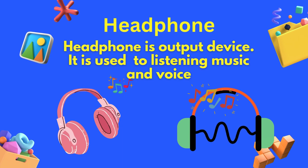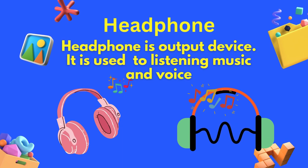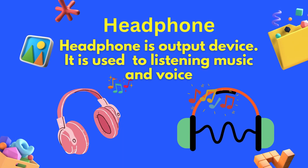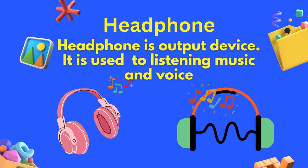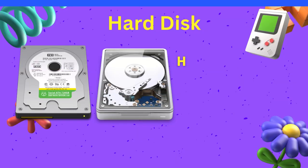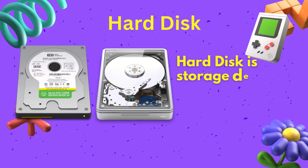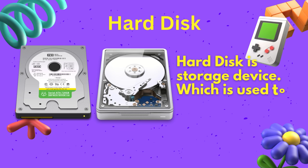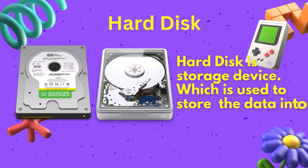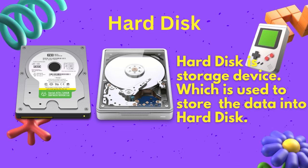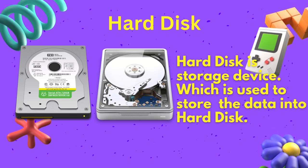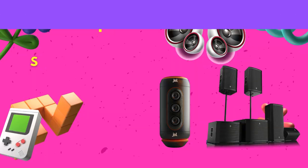Headphone. A headphone is an output device. It is used for listening to music and voice. Hard disk. A hard disk is a storage device, which is used to store data.